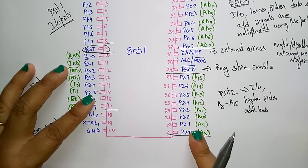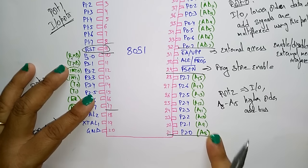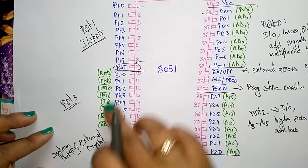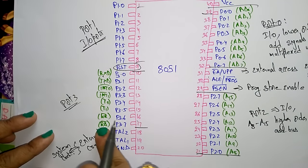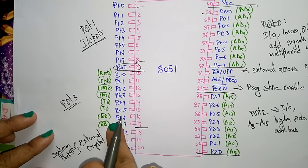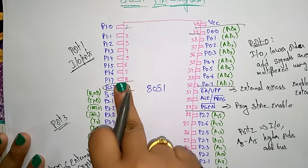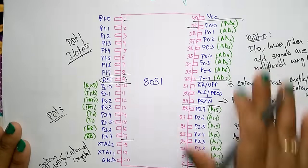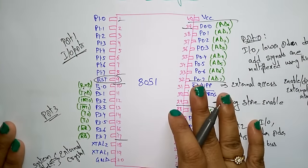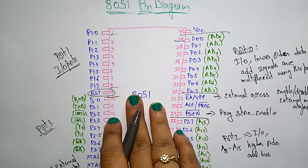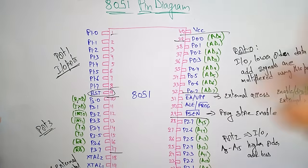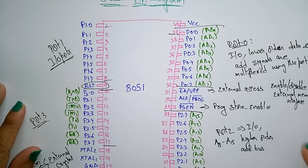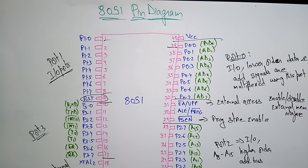To summarize: port 2 serves as I/O port and higher-order address bus; port 3 serves different functions — receive data, transmit data, interrupt, timer, read and write signals; port 1 is used only for I/O and no other functions; and VCC on pin 40 provides power supply to the circuit. These are the four ports present in the 8051 microcontroller.